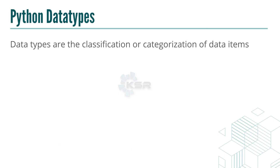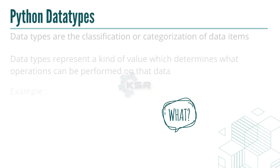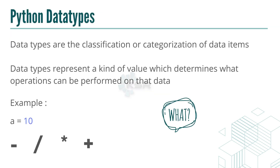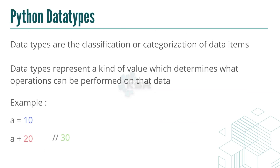Data types are the classification or categorization of data items. They represent the kind of value, which determines what operations can be performed on the data. So if 'a' equals 10 and 'a' is an integer, we can perform operations like subtraction, addition, division, and multiplication.